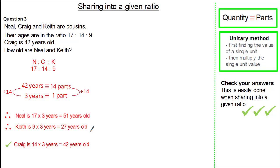The great thing about ratio is the ability to check. Craig has 14 parts, and if 1 part is 3 years, then 14 times 3 is 42 years old. So we're right, because the question stated Craig was 42 years of age. We've checked our answer with the question.